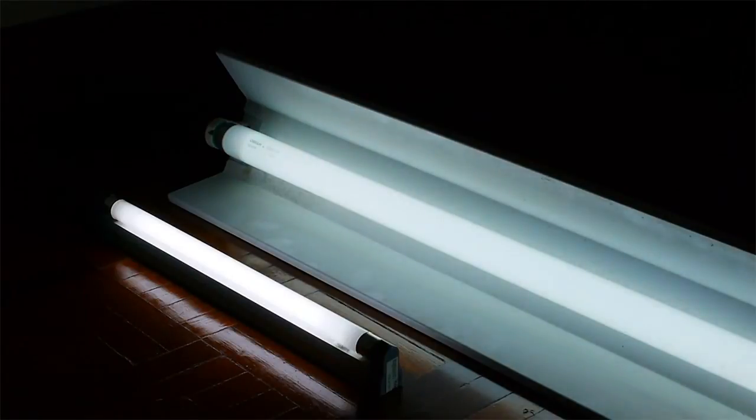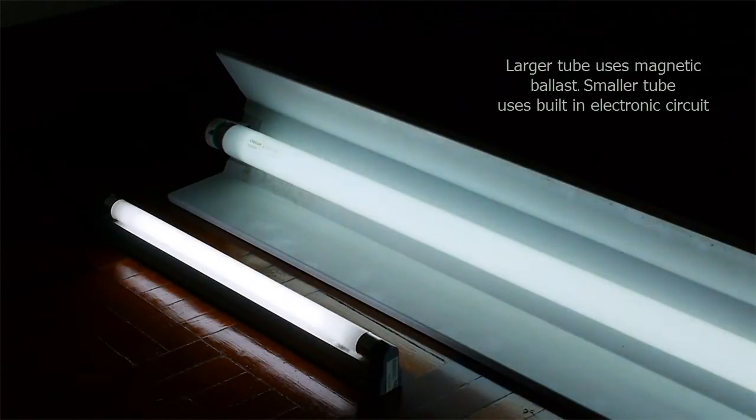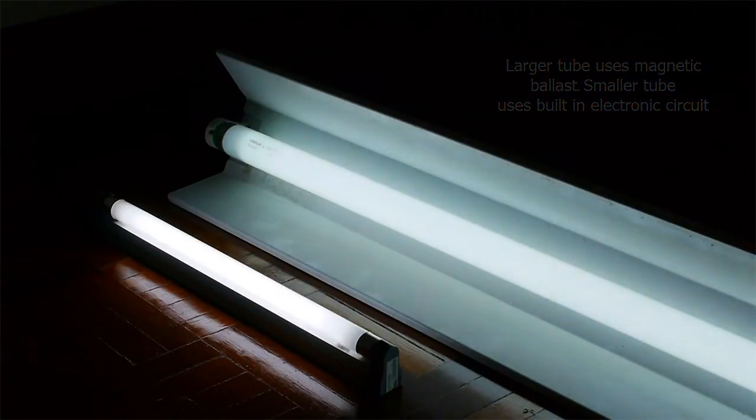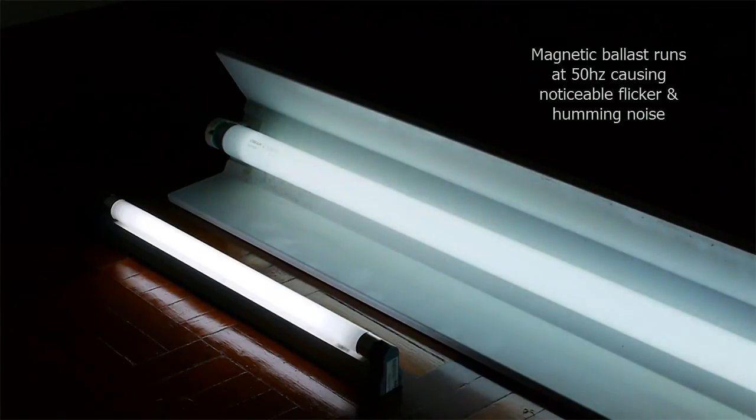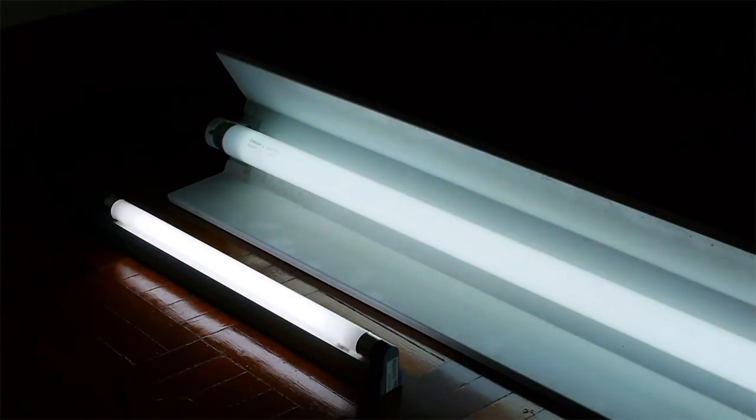If you notice in the video, the bigger light has a slight flickering effect, whereas the small light does not have any flicker. This is due to the lower frequency from the magnetic ballast in the older tube, whereas the small one uses electronic ballast at a higher frequency, so there is no flicker at all.